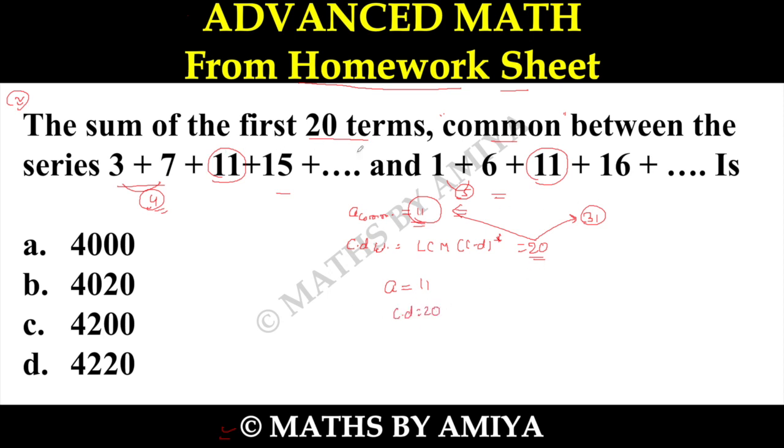Now we need to find the sum of first 20 terms. So SN is nothing but 20 by 2 n by 2 into 2 into first term plus n minus 1 into common difference. This one is 20 so we can say this one is nothing but 10.